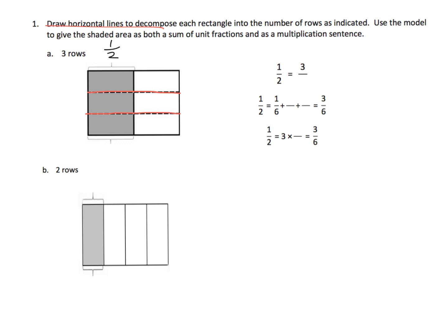We're going to cut here and cut here. We've now created our three rows. We now see that our whole has been cut into six pieces, and three of them are shaded in, so that's three-sixths. So one-half is equal to three-sixths. Another way to think of this: here's a sixth, here's a sixth, and here's a sixth — so one-half equals one-sixth plus one-sixth plus one-sixth, which equals three times one-sixth.